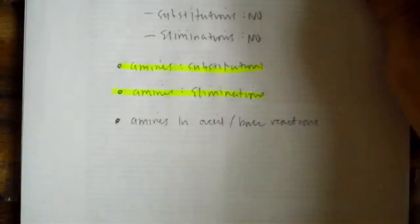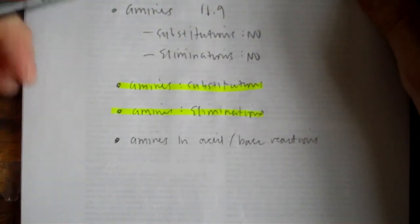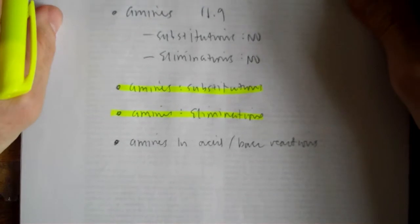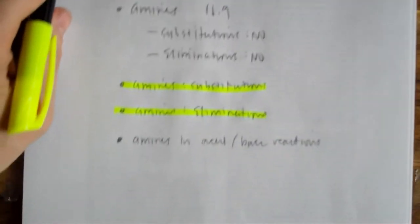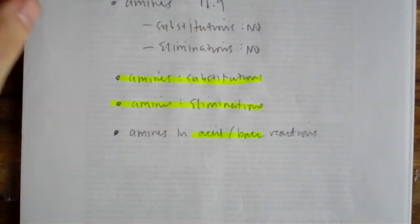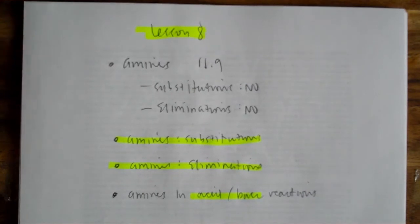I mean she just comes out and says right in the title they don't undergo these things and then she tells us how they do. So you know, I mean she's not wrong but it just seemed funny to me the way she said that. And then finally the last section is we're going to be talking about acid base reactions of amines, so I'm going to spend very little time on that just because it fits so nicely in the things we've done before.